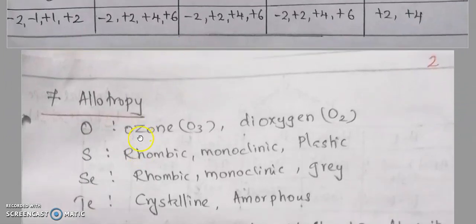Regarding allotropy, oxygen has two allotropes: ozone (O₃) and dioxygen (O₂). Sulfur has rhombic sulfur, monoclinic sulfur, and plastic sulfur. Selenium and tellurium also exhibit allotropy.